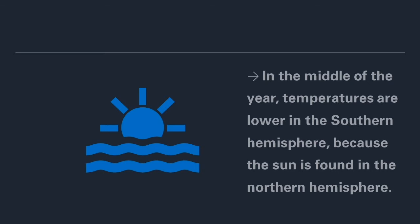In the middle of the year the sun tends to move to the northern hemisphere, so the ITCZ also gravitates more to the northern hemisphere, which explains why temperature and rainfall totals are generally lower in the middle of the year in the southern hemisphere.